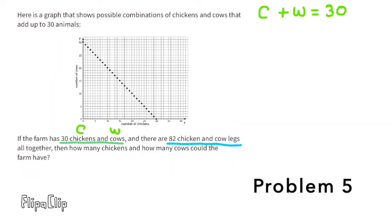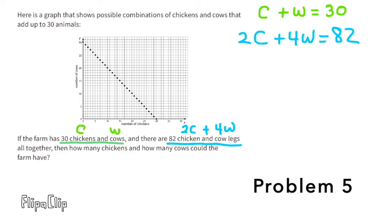Problem number 5. Here is a graph that shows possible combinations of chickens and cows that add up to 30 animals. If the farm has 30 chickens and cows, and there are 82 chicken and cow legs altogether, then how many chickens and how many cows could the farm have? Chickens plus cows equals 30. We can use C to represent chickens and W to represent cows. Since chickens have 2 legs, we multiply 2 times C, and cows have 4 legs, we multiply W times 4. So we write the equation 2C plus 4W equals 82, where 82 is the total number of legs.